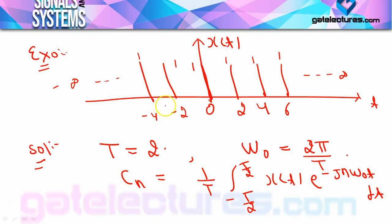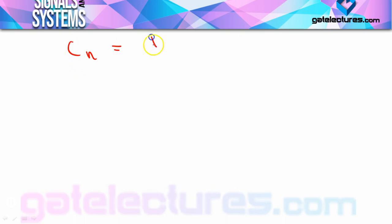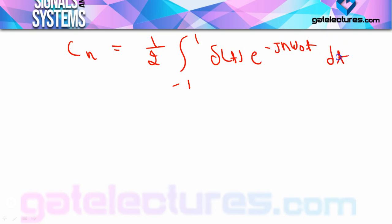Since T = 2, T/2 = 1, so we integrate from −1 to +1. In this interval, x(t) is not the constant 1 — it is only an impulse at 0, which is δ(t). So cn becomes (1/2) ∫ from −1 to +1 of δ(t)·e^(−jnω₀t) dt.